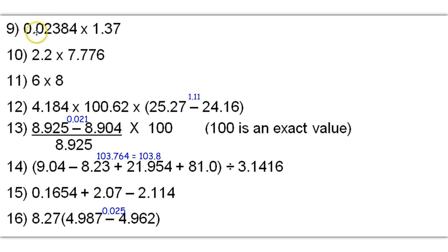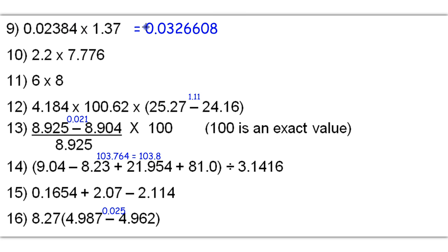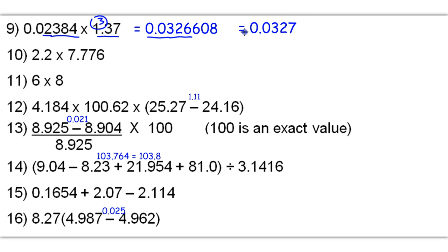Number 9 — we're multiplying again. 0.02384 times 1.37 gives us a raw answer of 0.0326608. We're going to round to the least sig figs. This is 4 sig figs, this is 3 sig figs, so we're going to go with 3 sig figs. Remember, leading zeros are not significant, but you still have to keep them. My first 3 sigs are the 3, 2, and the 6. This 6 rounds up to a 7, giving me 0.0327 as the final answer.